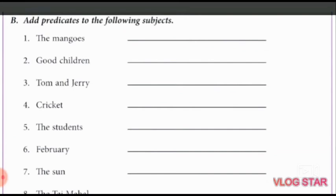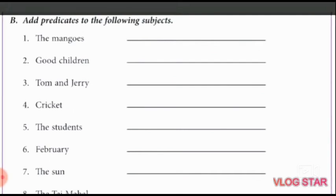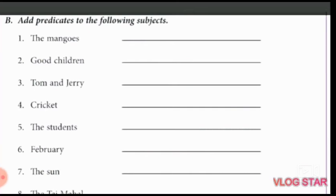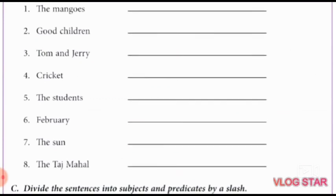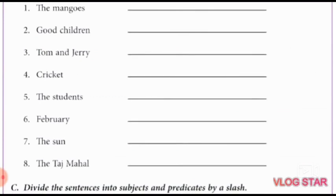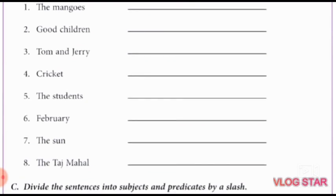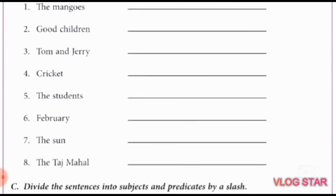Good children. Good children always obey their parents. Now it is a complete sentence. Number three, Tom and Jerry. Tom and Jerry are cartoon characters. Cricket. Cricket is an outdoor game. The students. The students is the subject. The students walked in a line. Now it is a complete sentence.